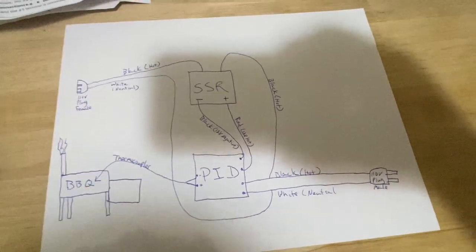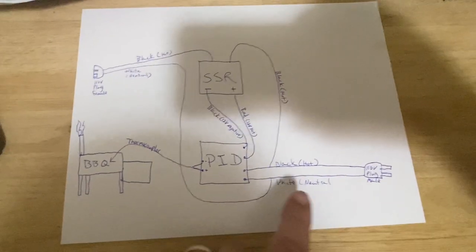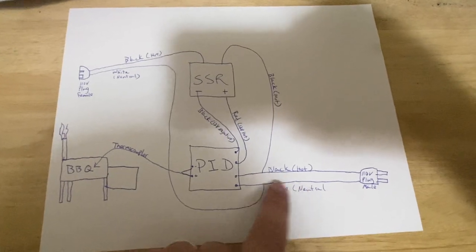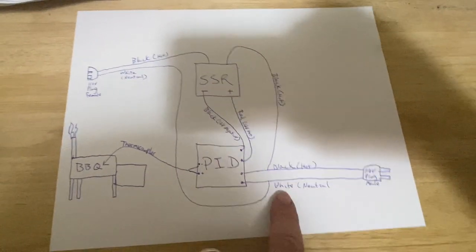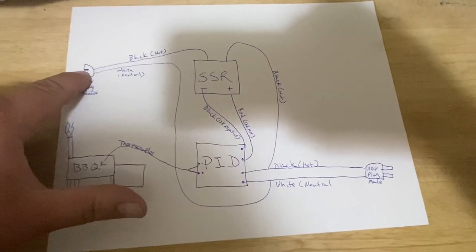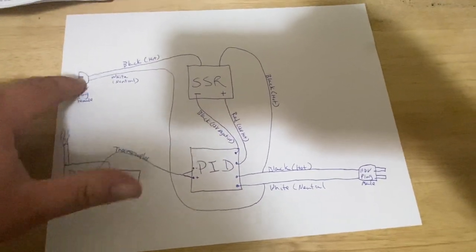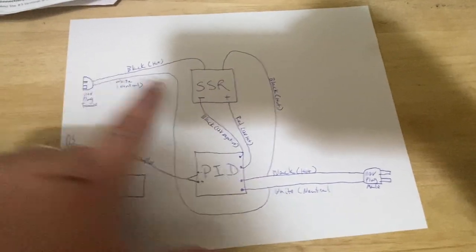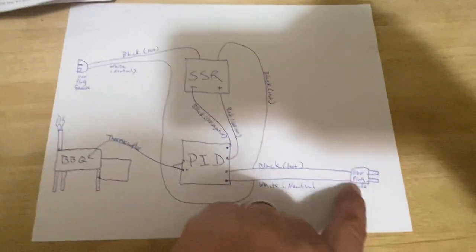You're also going to take a leg off of your plug, your white neutral that's coming through the wall, and you're going to run that to the white neutral side of your female plug. So basically you got black coming off your SSR, you got white coming off of your wall plug.